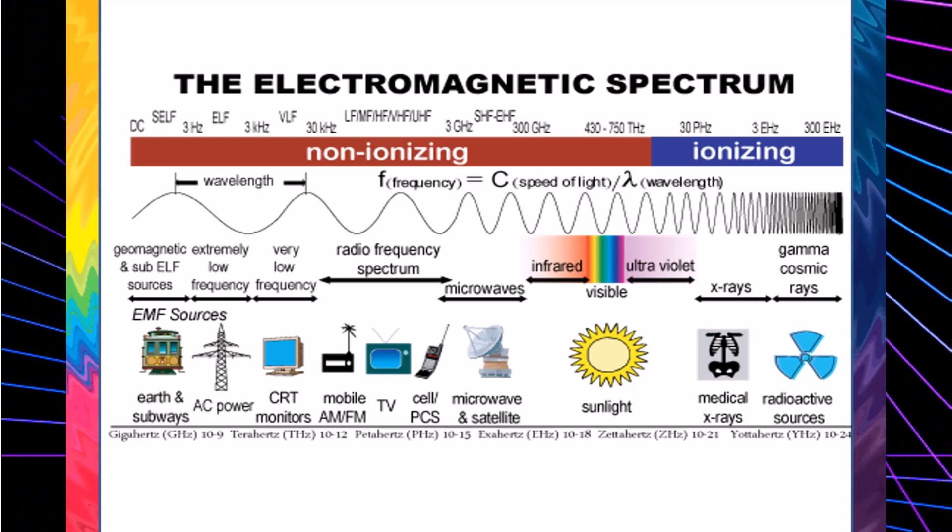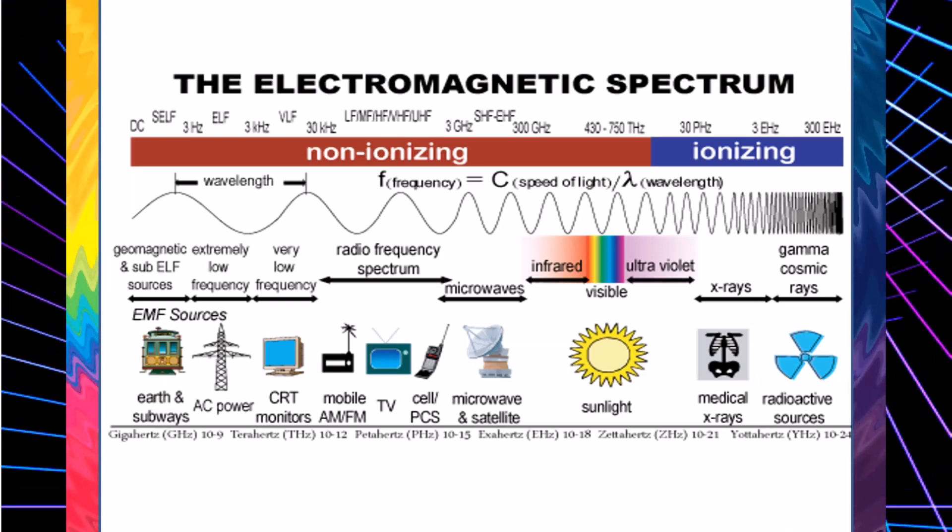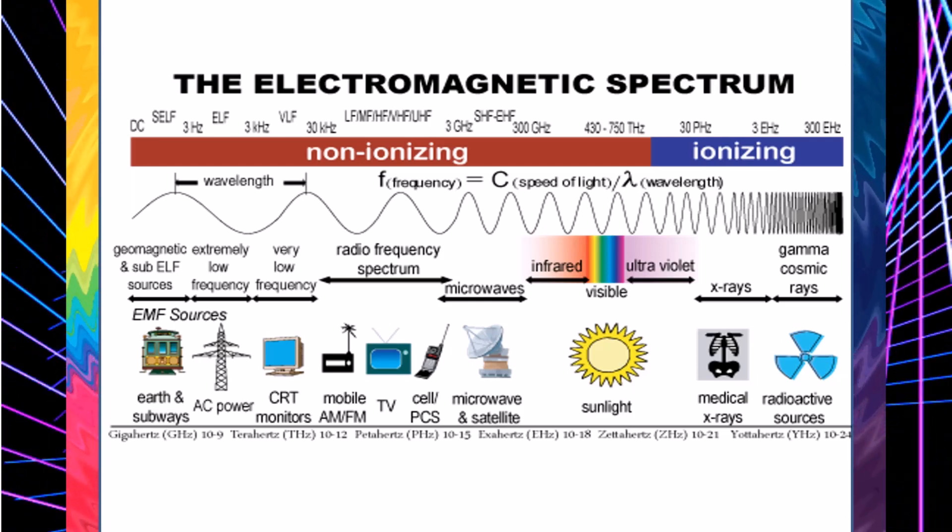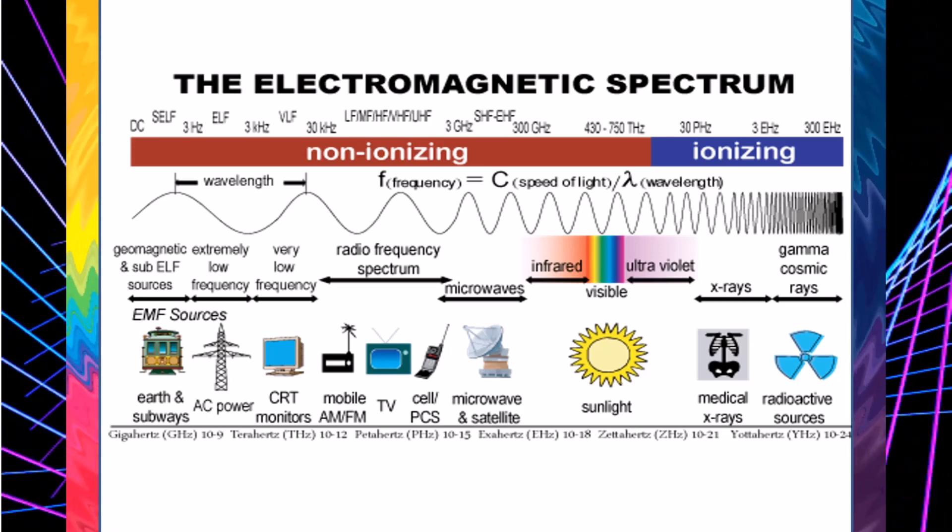Radio waves have the lowest energy and frequency and the longest wavelength. Gamma rays are at the opposite end of the spectrum with the highest energy and frequency and shortest wavelength.